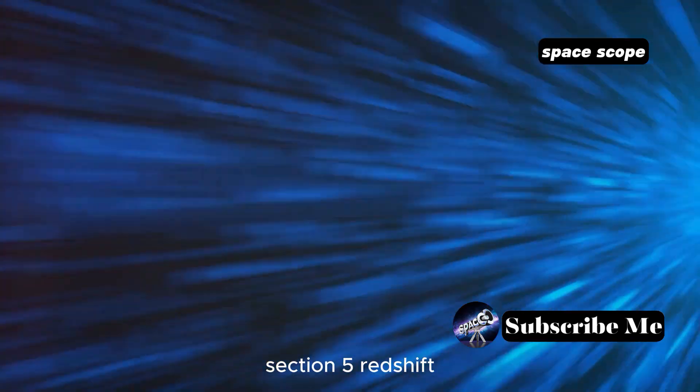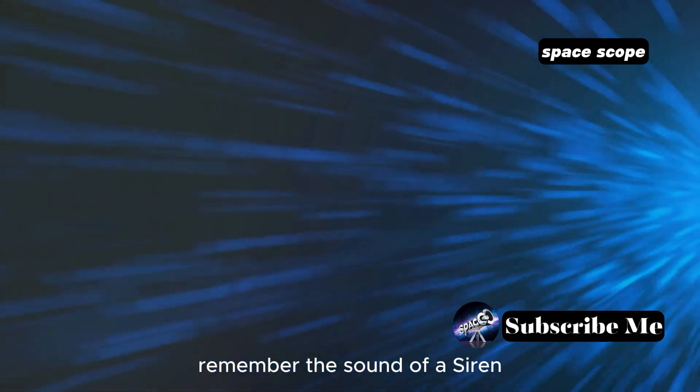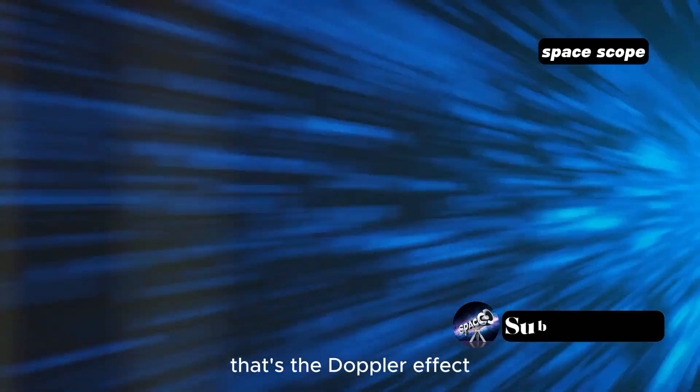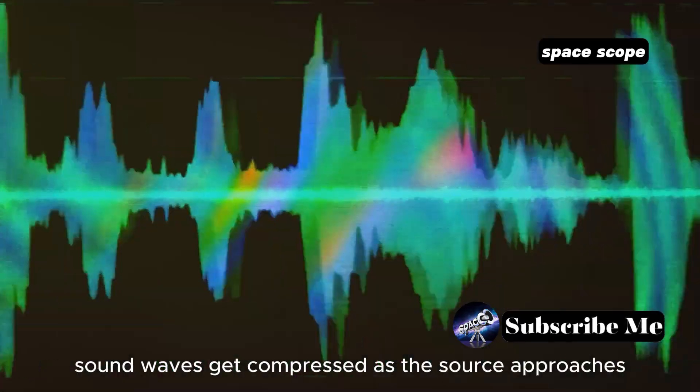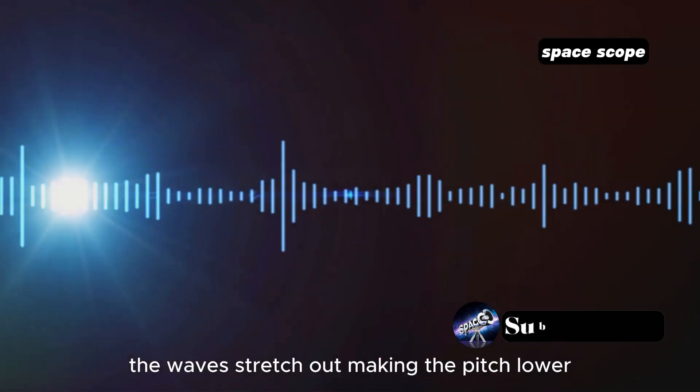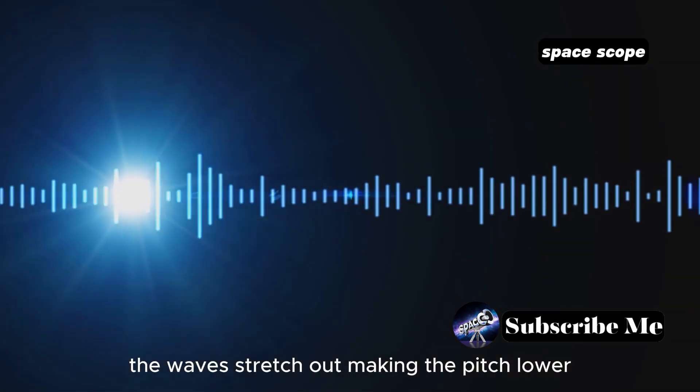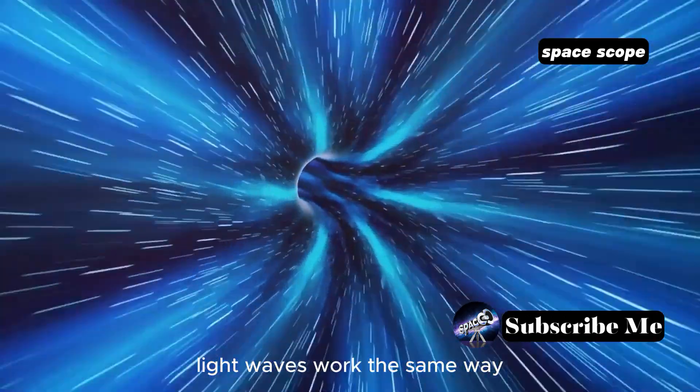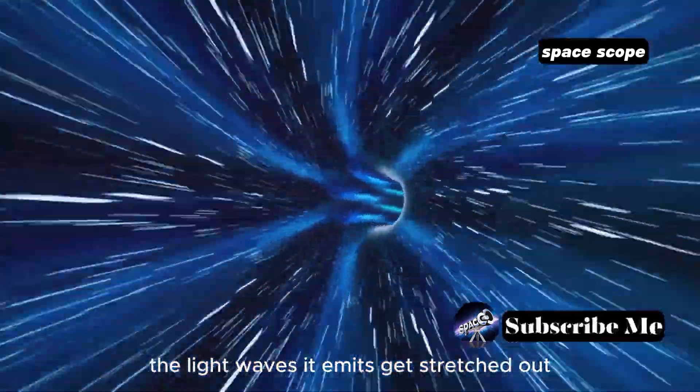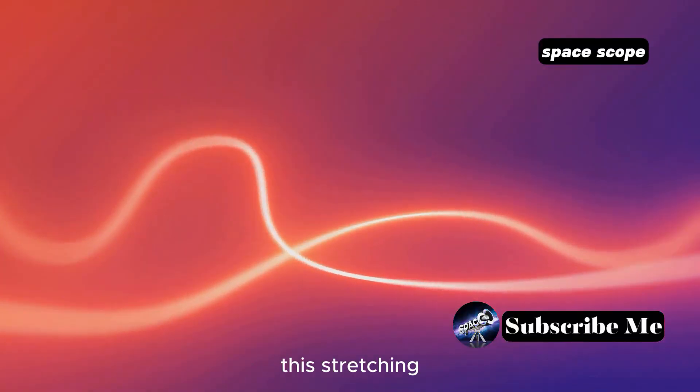Redshift: the Doppler effect of light. Remember the sound of a siren changing pitch as it moves towards or away from you? That's the Doppler effect. Sound waves get compressed as the source approaches, making the pitch higher. As it moves away, the waves stretch out, making the pitch lower. Light waves work the same way. When an object moves away from us in space, the light waves it emits get stretched out.